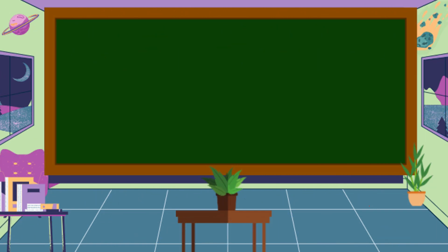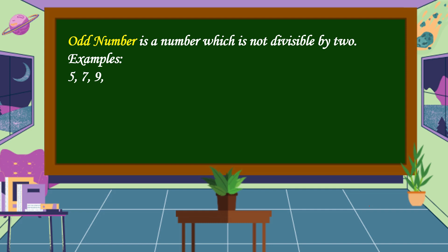What is an odd number? An odd number is a number which is not divisible by 2. For examples, 5, 7, 9, 11, and so on.